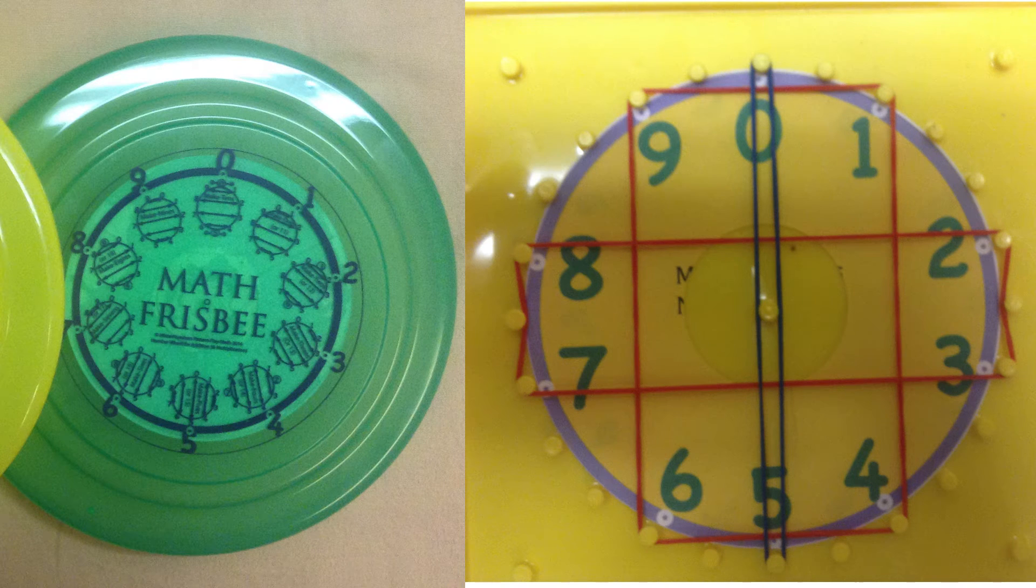Kids learn better with number wheel manipulatives, like this math frisbee on the left, and the geoboard on the right, where they create the patterns with rubber bands and other things.